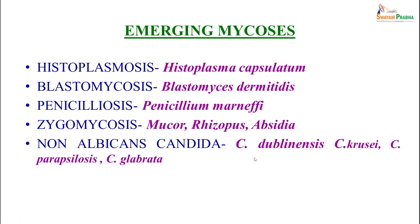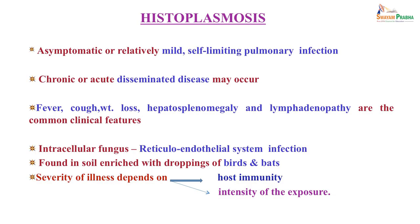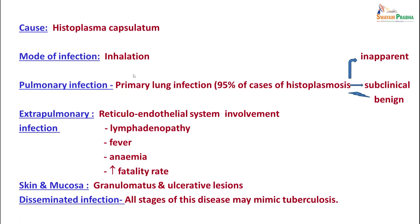Other emerging mycoses causing pulmonary infections include histoplasmosis by Histoplasma capsulatum, blastomycosis, penicillosis, zygomycosis, and non-albicans Candida. Histoplasmosis is usually an asymptomatic or mild self-limiting pulmonary infection, but chronic or acute disseminated disease can occur. Fever, cough, weight loss, hepatosplenomegaly, and lymphadenopathy are common clinical features. It is an intracellular parasite residing within the reticuloendothelial system, found in soil enriched with bird and bat droppings, and is mainly transmitted by inhalation.